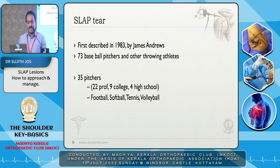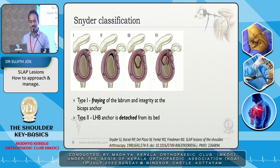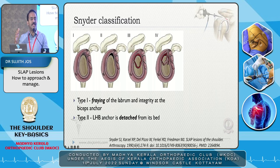SLAP tears were first described by James Andrews in 1983 in baseball pitchers, throwing athletes, and even in high school and college athletes. Looking at the Snyder classification: Type 1 is just fraying — you can probably leave it alone; debridement or coablation might be enough. Type 2 is the one which requires serious consideration regarding age, activity level, and whether to repair.